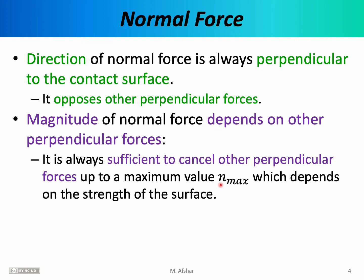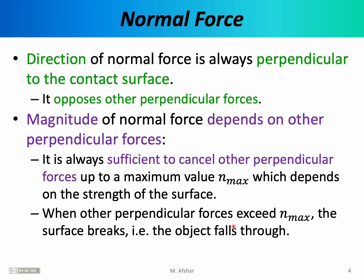The actual value of N_max depends on the strength of the surface. Placing a box on a glass table versus a steel table versus a wooden table will give different values for N_max. A solid steel table will have a much larger N_max than a delicate, fragile glass table. When other perpendicular forces exceed N_max, the normal force can no longer balance those forces, the surface breaks, and the object falls through. In our course, we will always consider situations where we're not breaking through the surface.